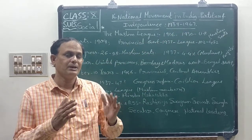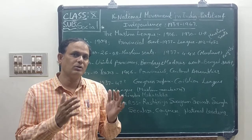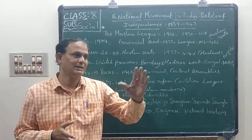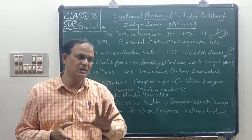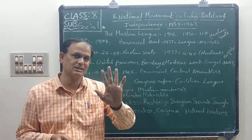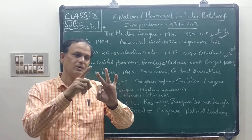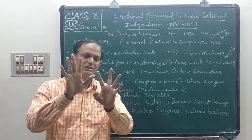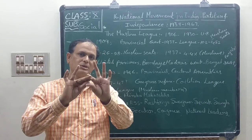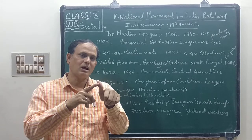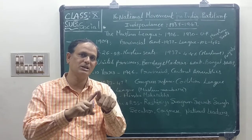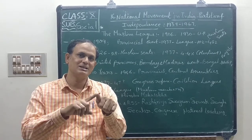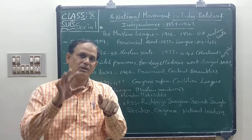This is the Second World War time. In the Second World War, some countries fought each other — there were Allied group countries and Axis group countries. In the Allied group, five important countries were England, France, USA, USSR, and China. In the Axis power, there were Germany, Japan, and Italy. Our country was under the control of the British, so the British government took our Indian soldiers to participate in the Second World War on behalf of Britain.